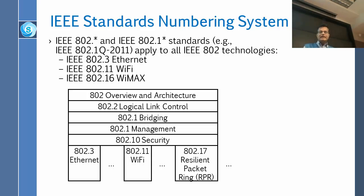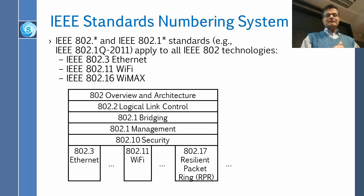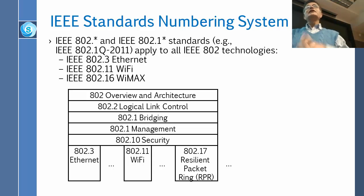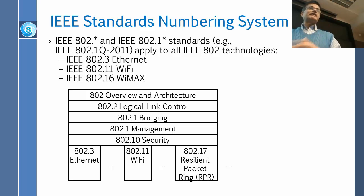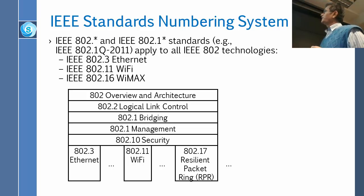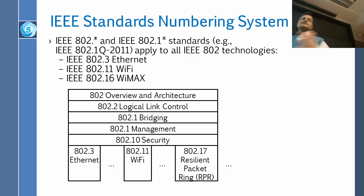IEEE has a numbering system. 802 represents February 1980, when the first IEEE Standards Committee was formed for Ethernet, and they called it 802. Many other committees formed after that. 802.1 is the base that applies to all 802 standards. 802.3 is Ethernet, 802.11 is Wi-Fi, 802.17 is RPR, 802.16 is WiMAX, and there is a whole list which we will see soon.